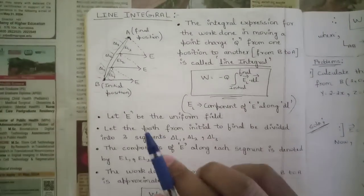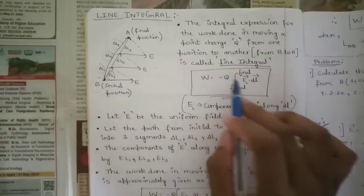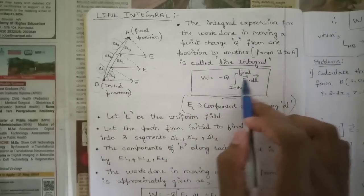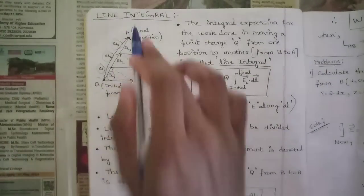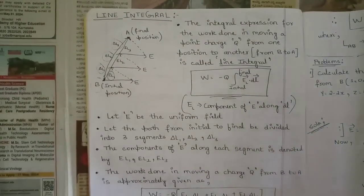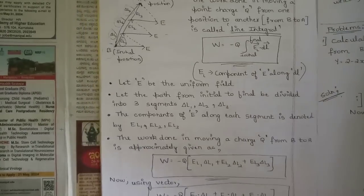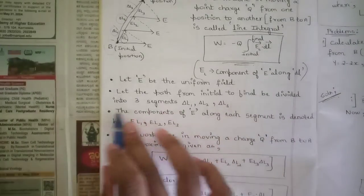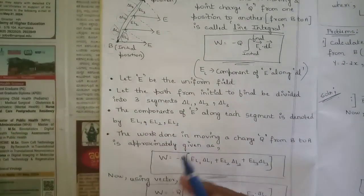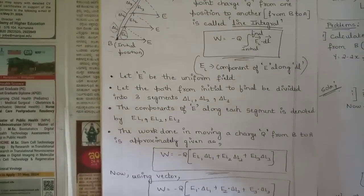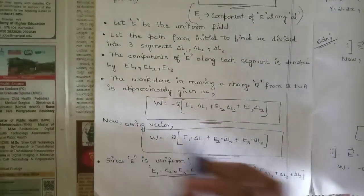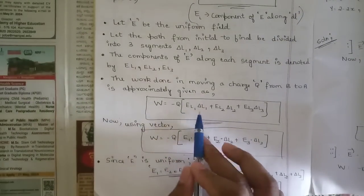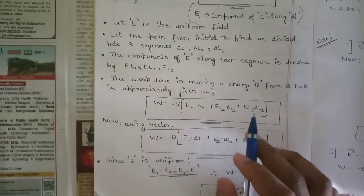The work done in moving a point charge q from position B to A is defined as the line integral: W = −q ∫(B to A) E · dl, where El represents the component of the electric field along the path element dl. Dividing the path into three segments, the approximate work done is W = −q(El1·Δl1 + El2·Δl2 + El3·Δl3).